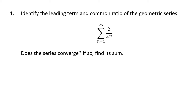Some important terms when talking about geometric series are leading term and common ratio. The leading term is the very first number you write down when you start writing the numbers in the series. So when n equals 1, you have to pay attention to that number on the bottom of the sigma. When n equals 1, the first term is 3 divided by 4 to the first power, also known as 3 fourths. So a, which is the typical letter we use for our starting term, is 3 fourths.